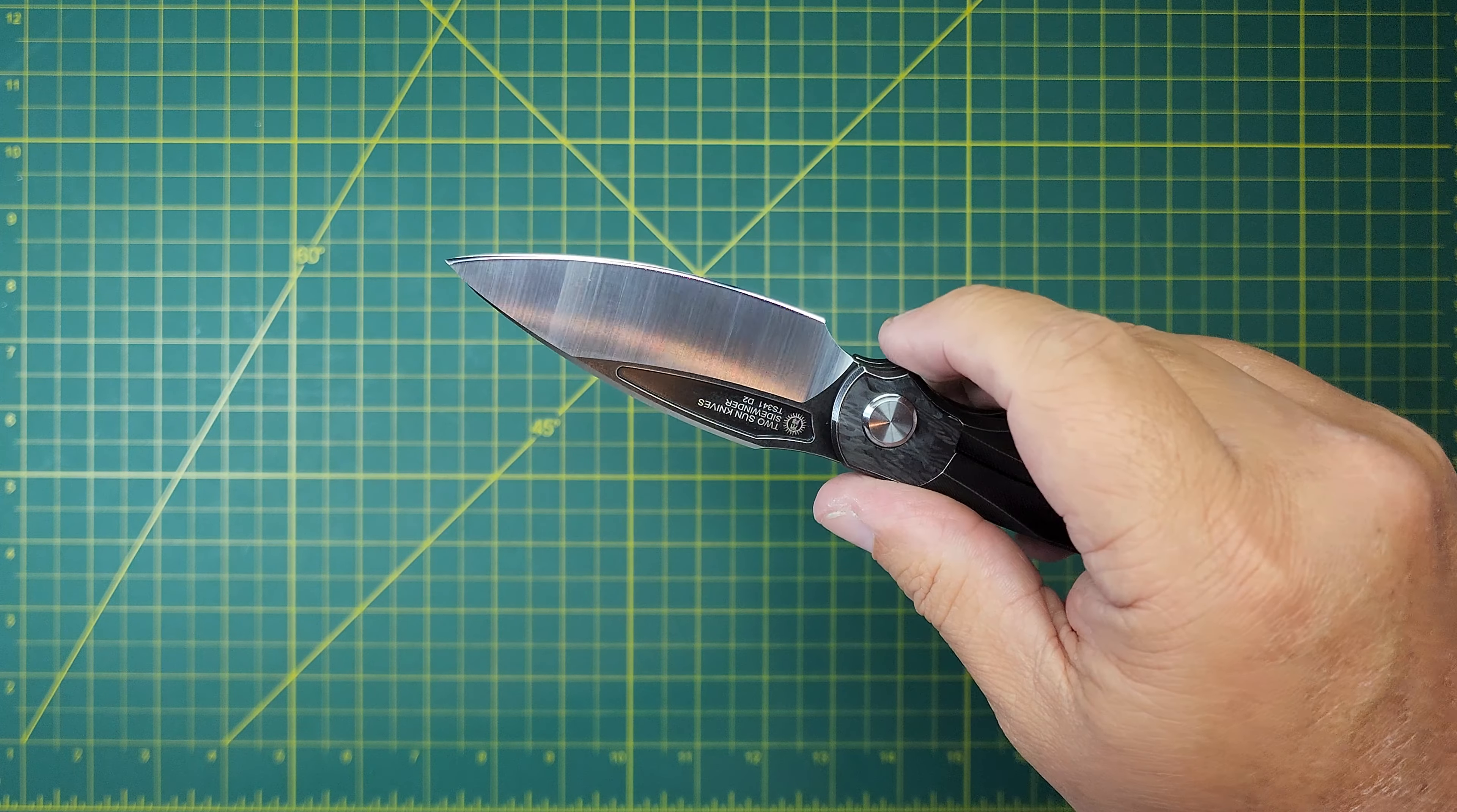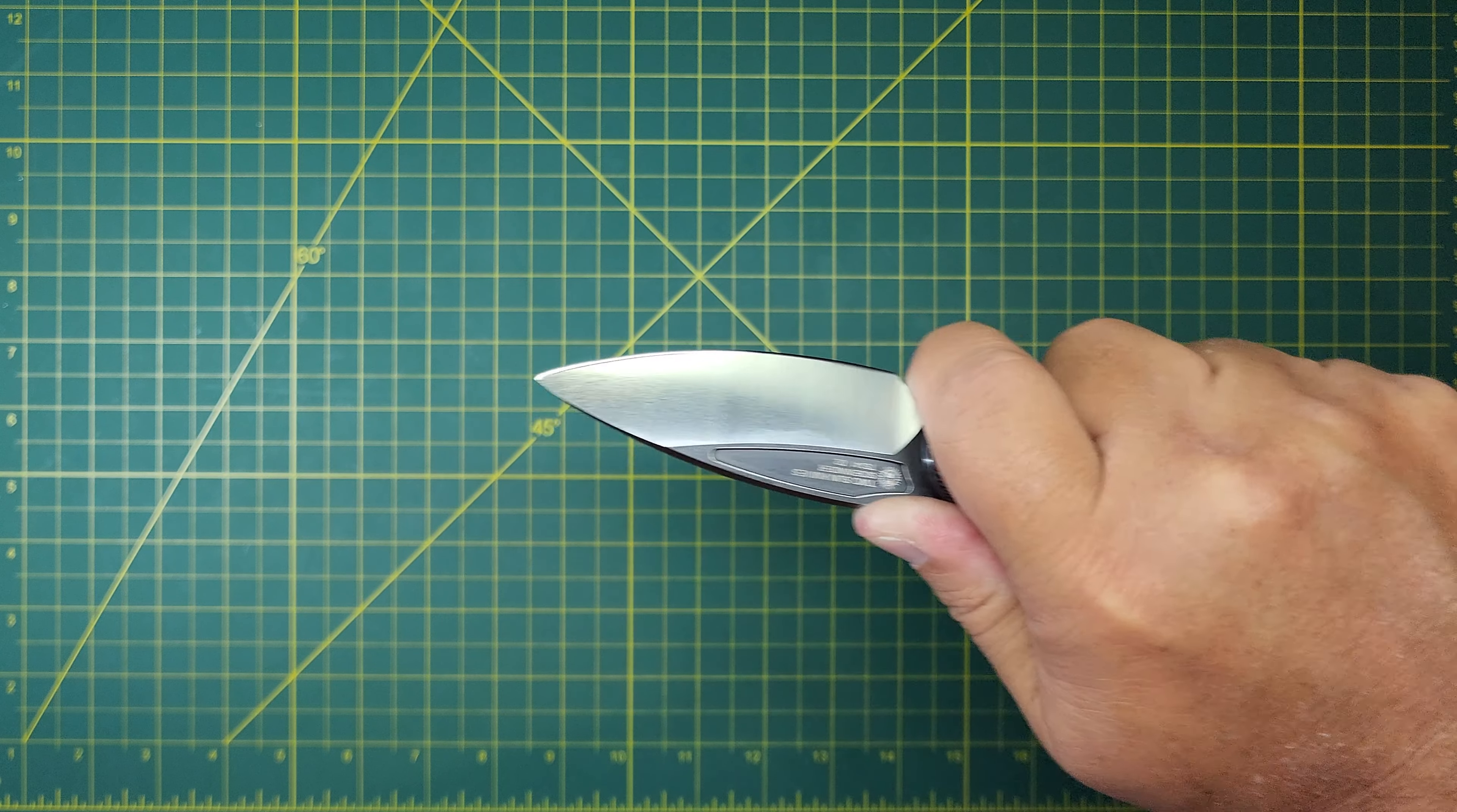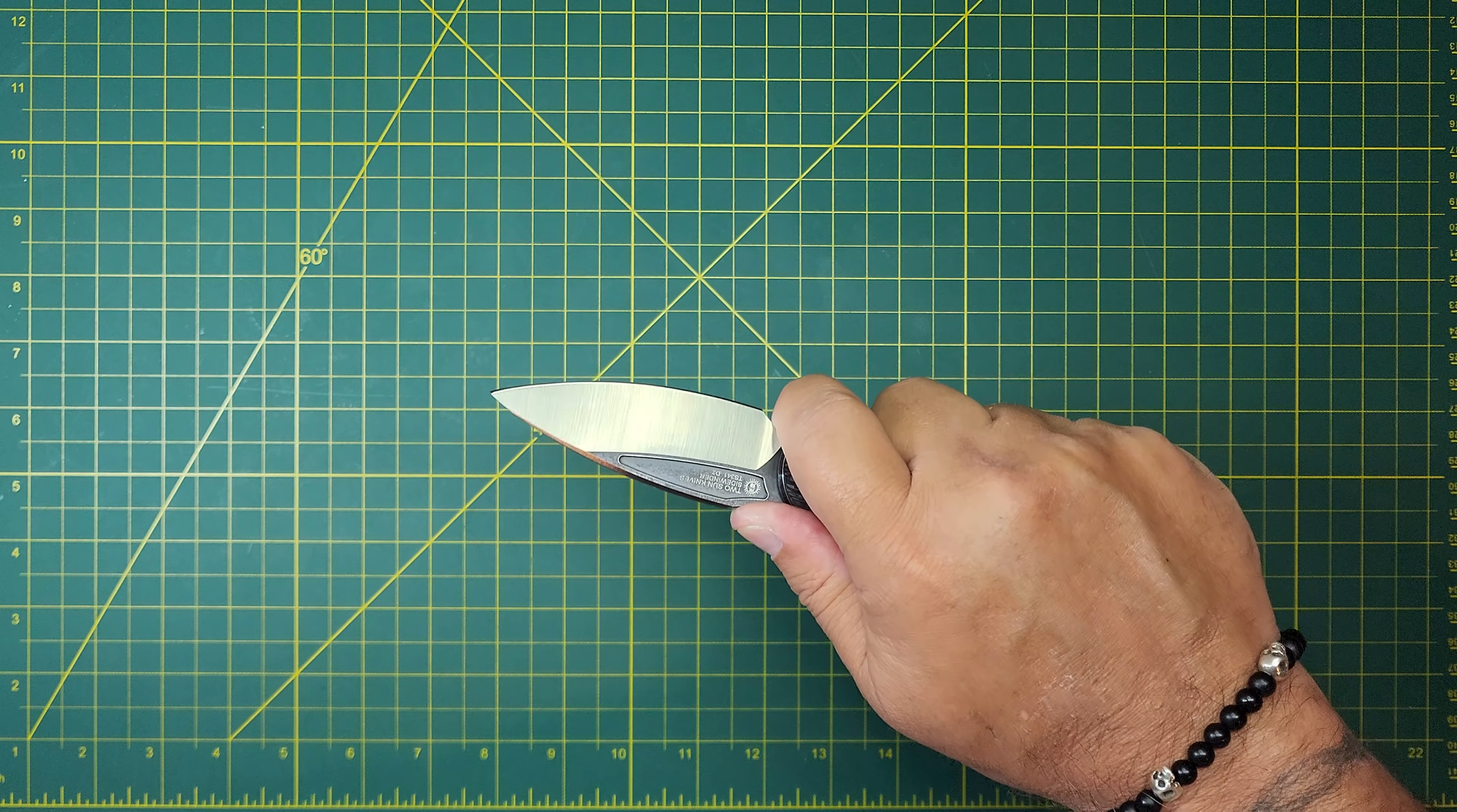You can, there is a finger choil here, so you can choke up on this and get a real good, comfortable, strong forward grip. Again, I wouldn't say it's for this, but you know, whatever detail, whatever that is, it's going to be able to do that. Nice and comfortable forward grip.